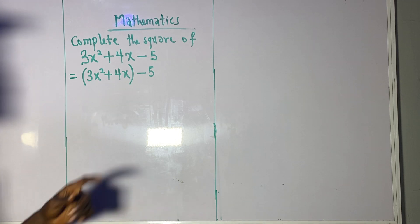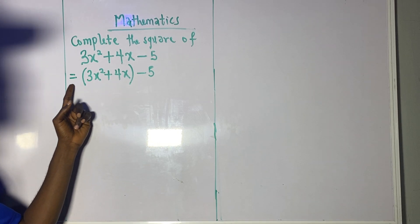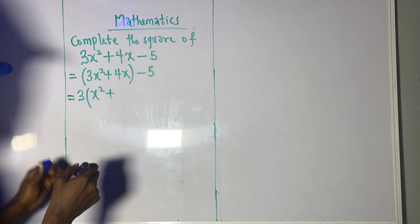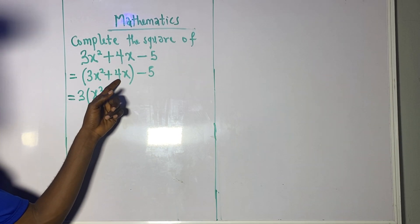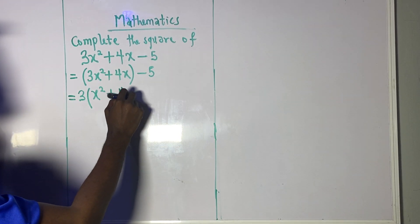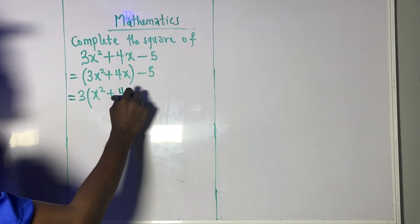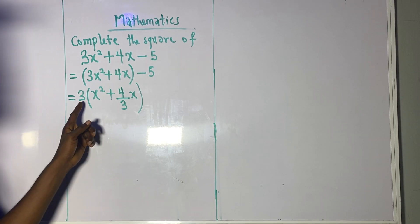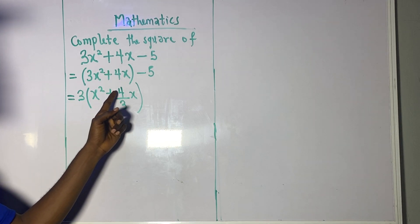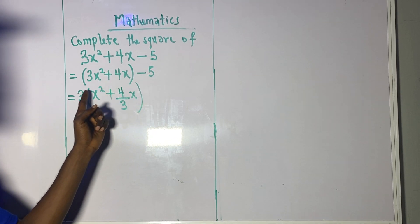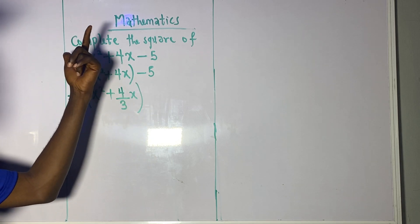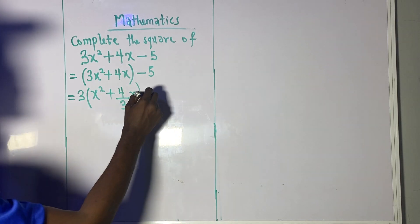I want the coefficient of x² to be unity — to be one. So I have to bring out this 3. That means we will have 3 brackets, then x² plus... because 3 is not common to both terms, whatever we have brought out, we have to divide the 4 by it. So we divide 4 by 3, giving 4/3. We do this because if you expand the bracket, 3 times x² still gives 3x², and 3 times 4/3 x still gives 4x — so nothing has changed.